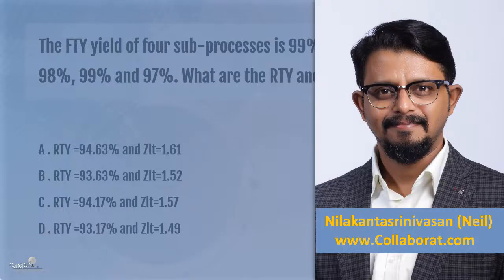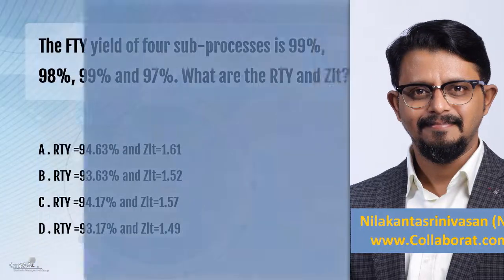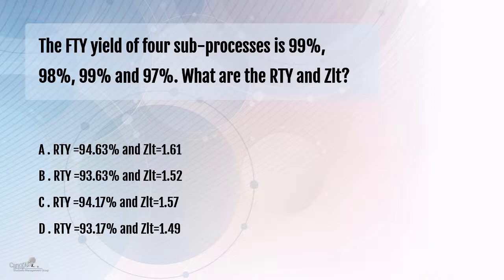Another slightly difficult question for you to answer. The first time yield of four sub-processes are given as 99%, 98%, 99%, and 97%. What is the roll throughput yield RTY and Z long term? In order to answer this question, you should know what RTY is, what the formula for RTY is, and what Z long term is.